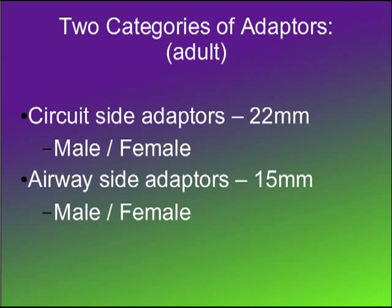Here are the two general categories of adapters: circuit side adapters, which are 22 millimeters, and airway side adapters, which are 15 millimeters, and of course the corresponding male and female for both.